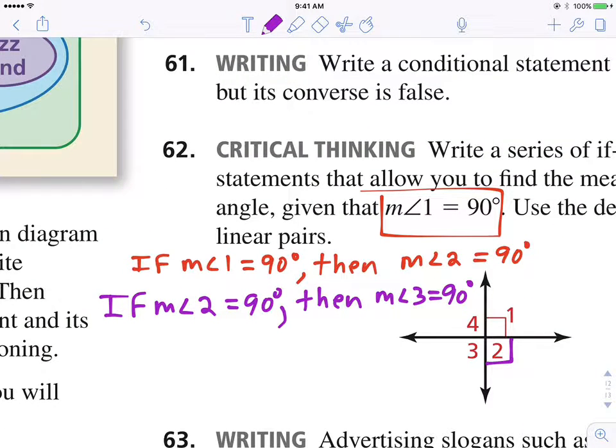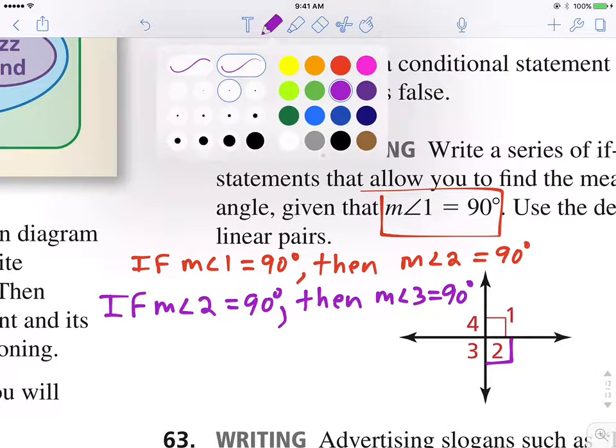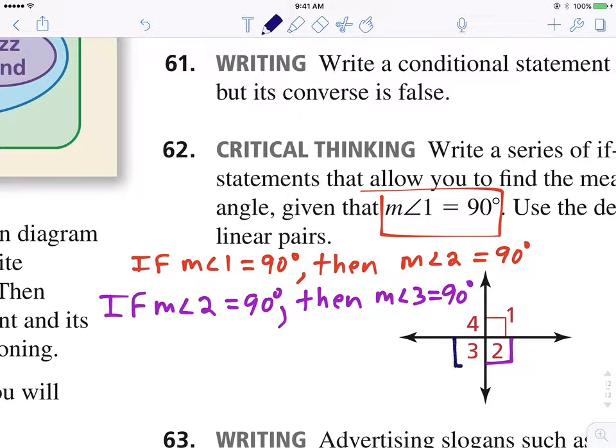Again, think about it. Linear pairs sum to 180. So two and three are linear pair angles. Therefore, the sum must be 180.